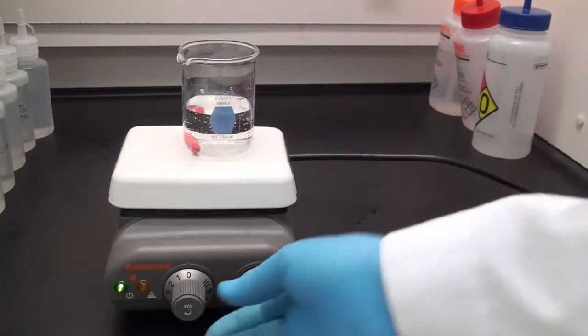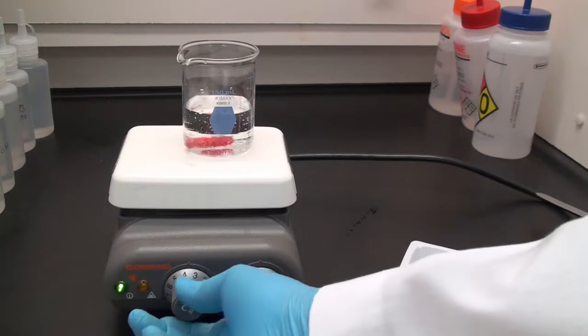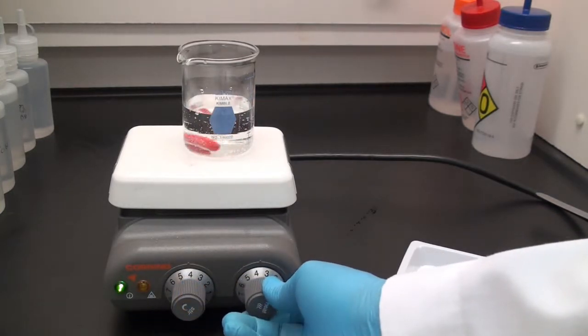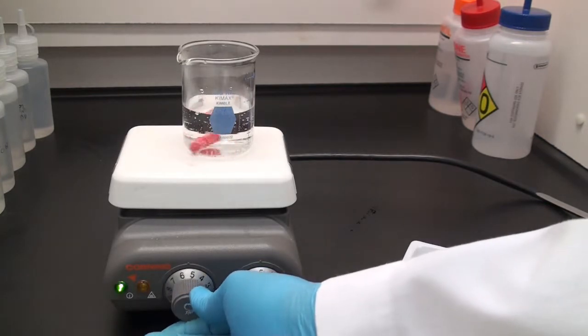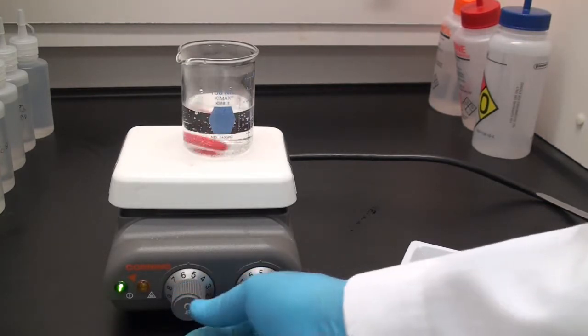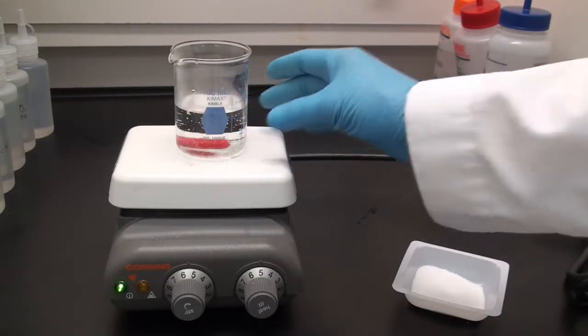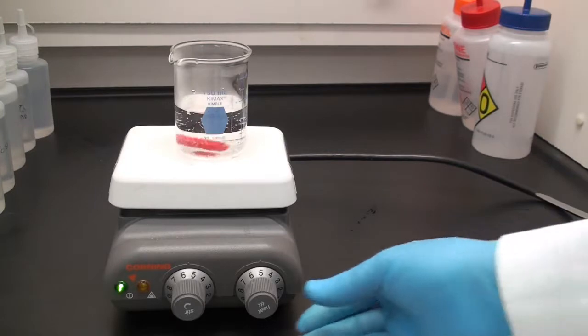I'm going to put that on and get my stir bar going. It's a good idea to start stirring before you start adding the solid. Otherwise, it could form a mass for some materials. I'm also going to turn the temperature up to try to maintain my 60 degrees as much as possible.